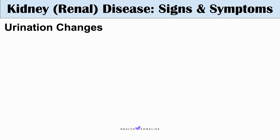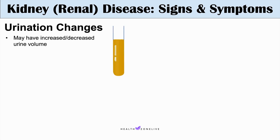The first one to talk about is urination changes. If there's an issue with the kidneys, we can see increased or decreased urine volume. In some kidney conditions, patients may experience more frequent urination, while in more advanced stages, we often see decreasing urine volume. Some kidney disease states can also lead to foamy urine, indicating protein in the urine, and in some cases blood in the urine, called hematuria.